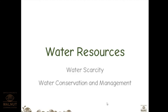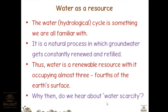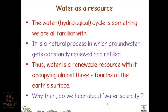Only around 2.97 percent is available as fresh water for such a huge population. The water or hydrological cycle is something we are all familiar with — evaporation, condensation, and precipitation are the processes involved. It is a natural process in which groundwater gets constantly renewed and refilled, making water a renewable resource occupying almost three-fourths of the earth's surface. So why do we still hear about water scarcity?